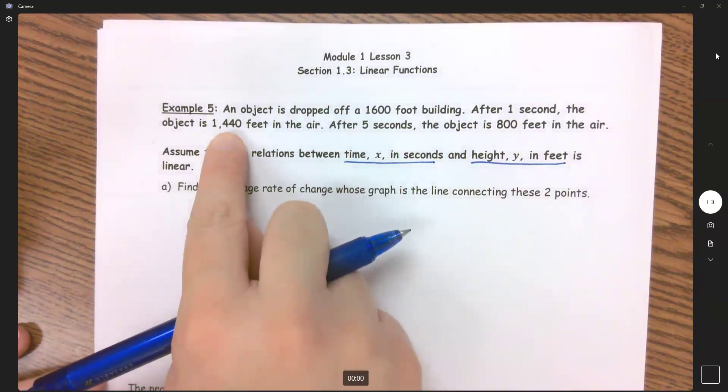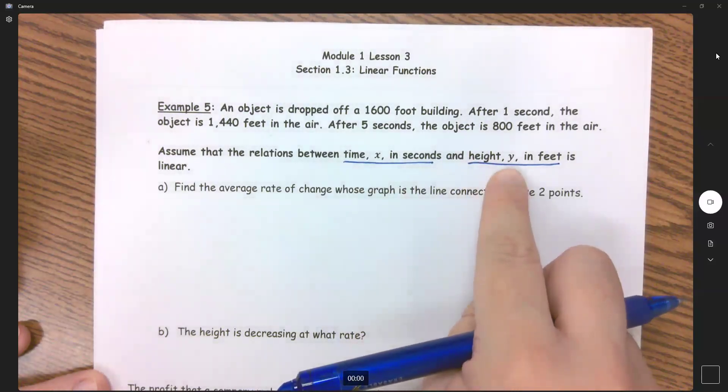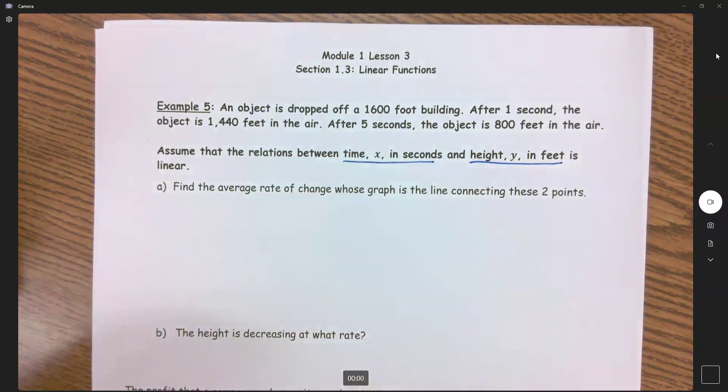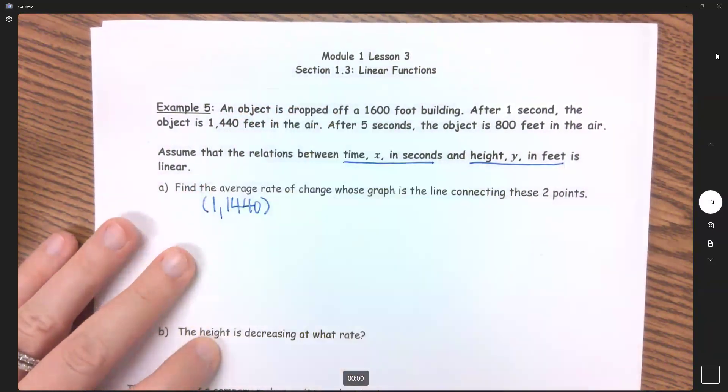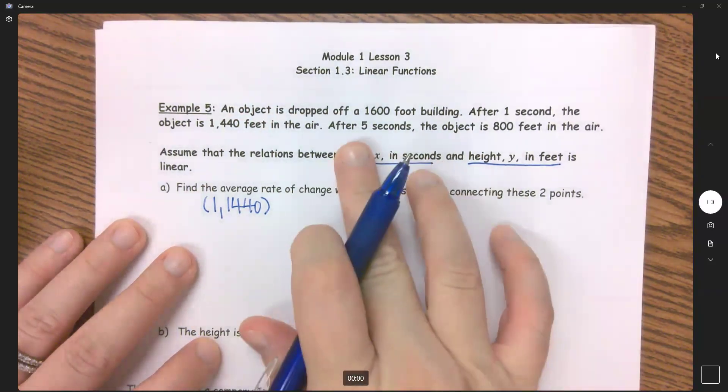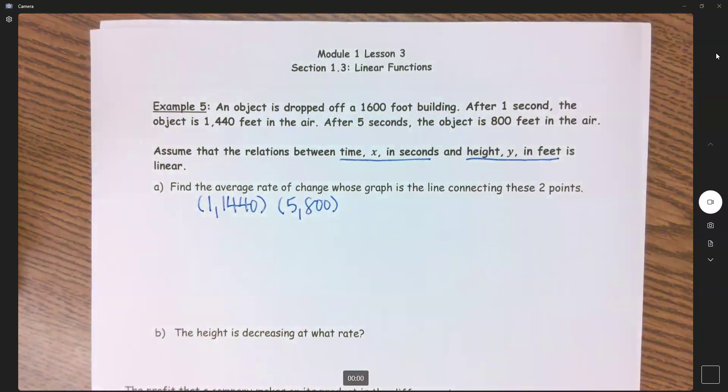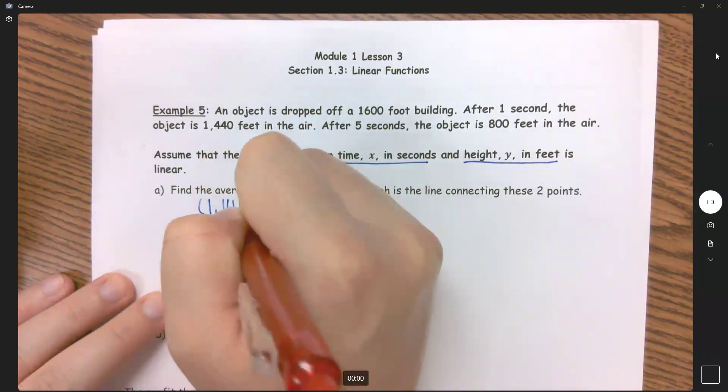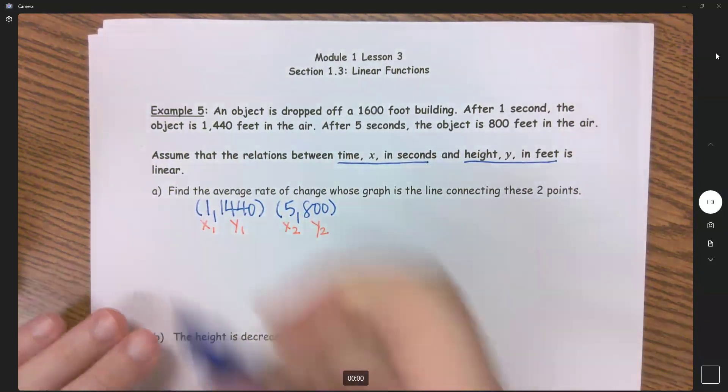And we just covered how to find slope using either of these versions of our formula. So let's make our ordered pairs. After one second we're at 1440 and it needs to go seconds your time comma the height your feet. So my first ordered pair here is 1 comma 1440 and my second one is after five seconds we're 800 feet, 5, 800. So if we want to find the average rate of change, find the slope. This is my x1 y1, x2 y2. My slope formula.